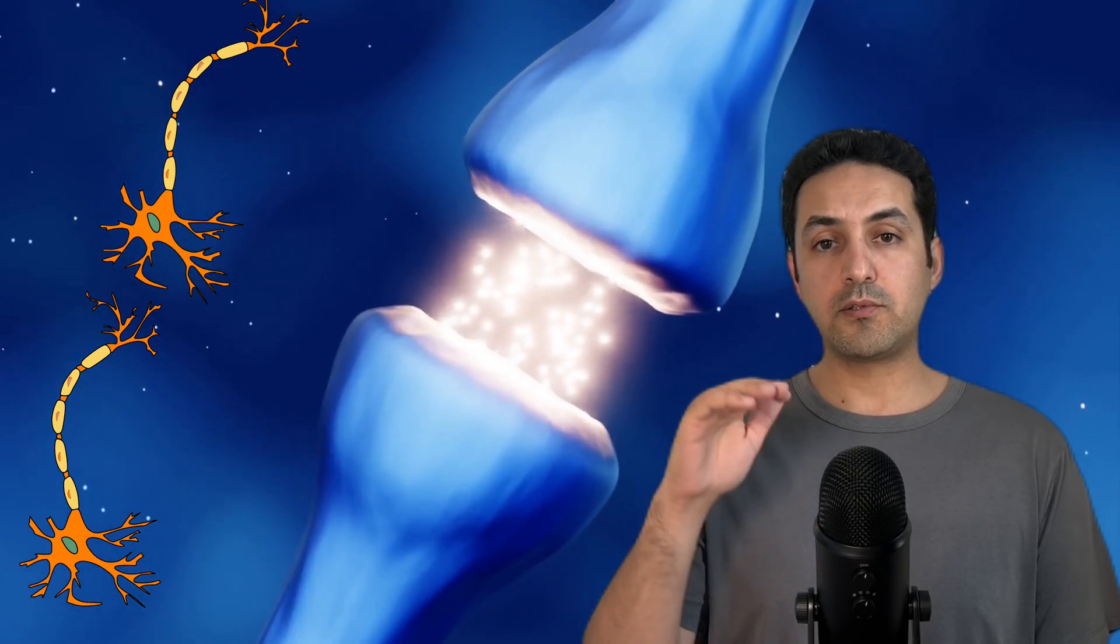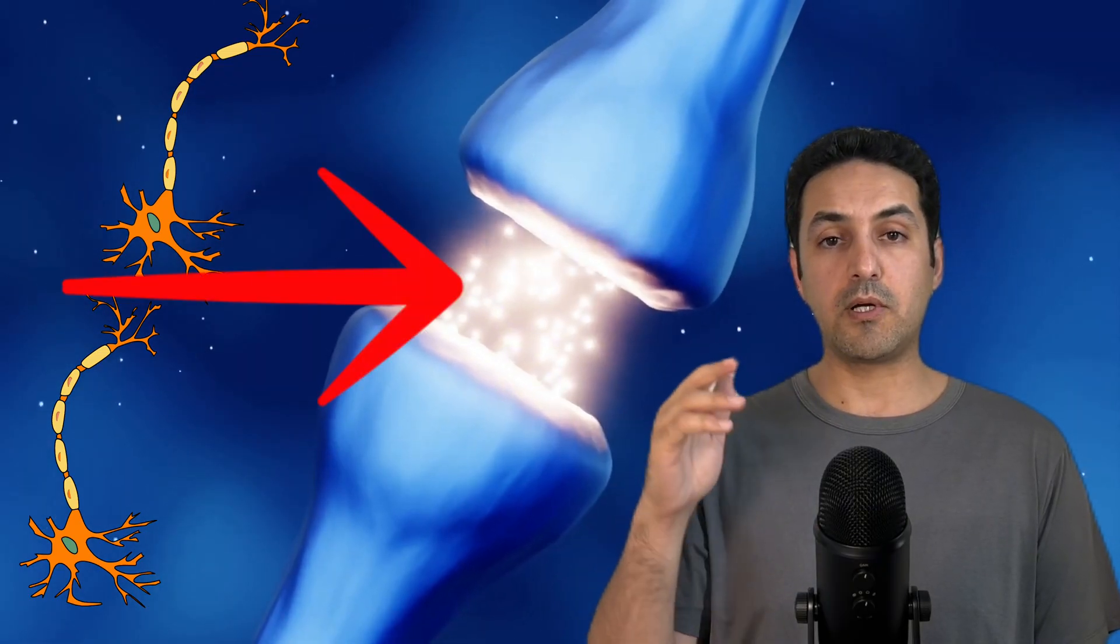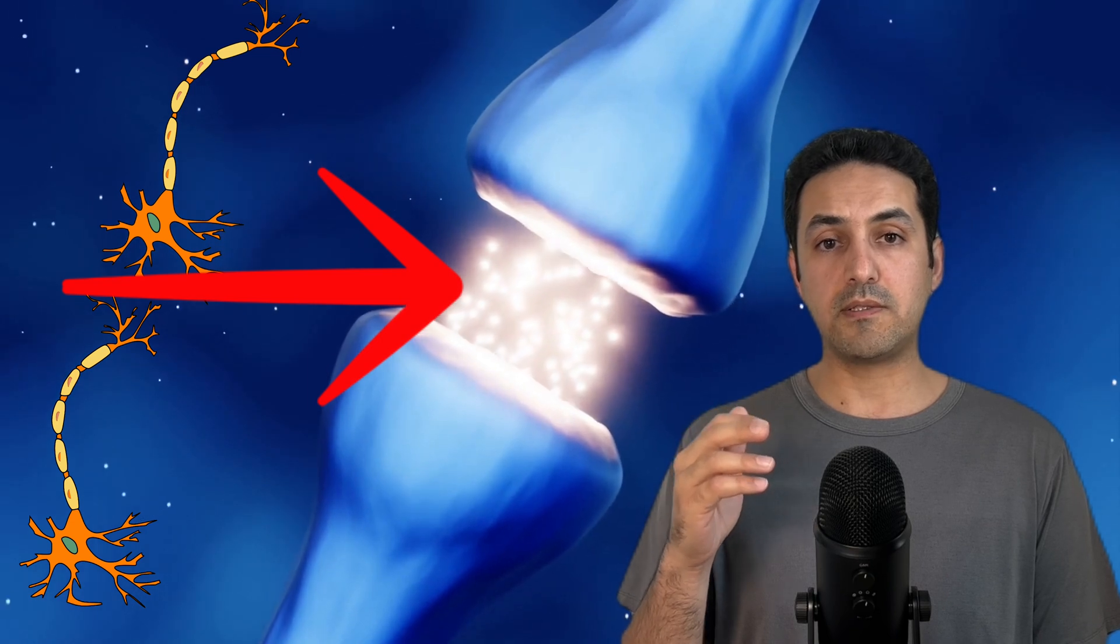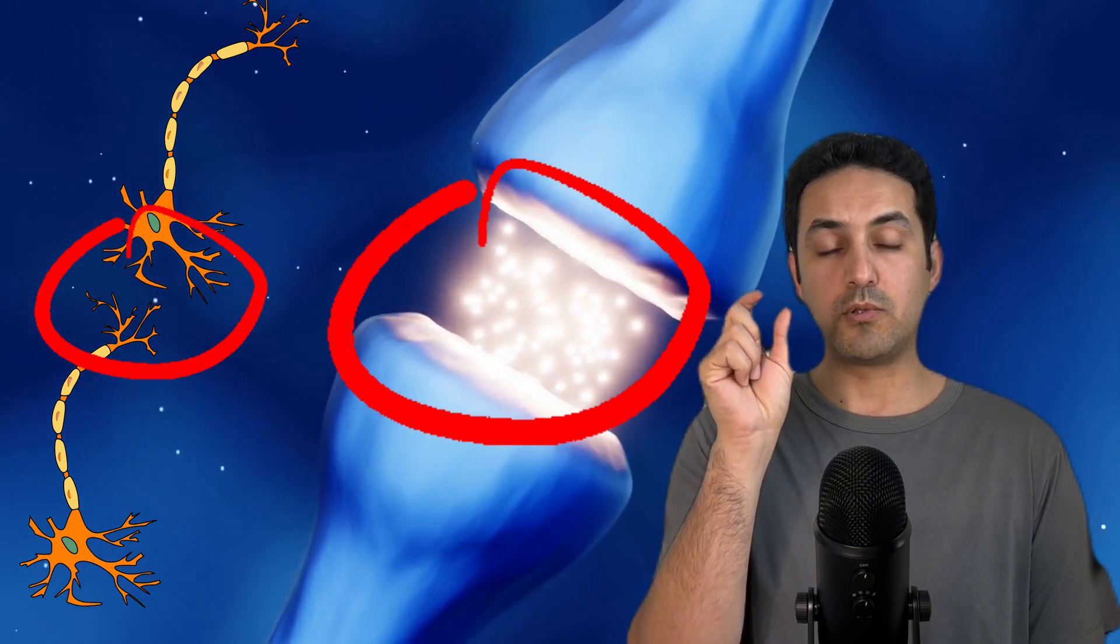This electrical signal travels through the axon, releasing chemicals called neurotransmitters across small gaps between neurons called synapses. These neurotransmitters then influence neighboring neurons, either exciting them, making them more likely to spike, or inhibiting them, making them less likely to spike.